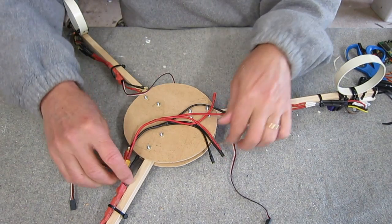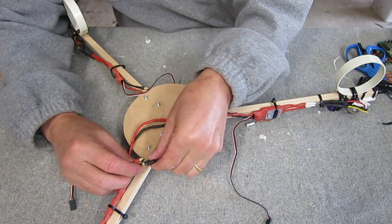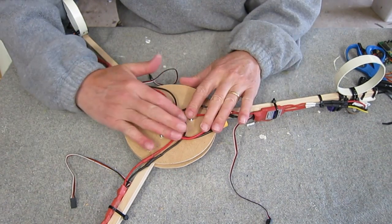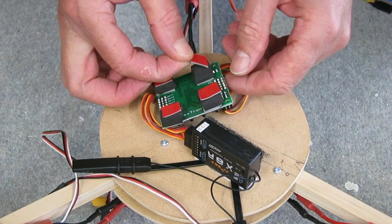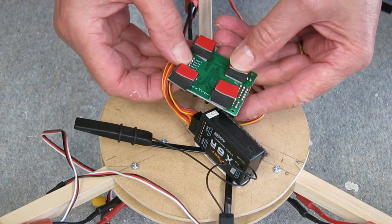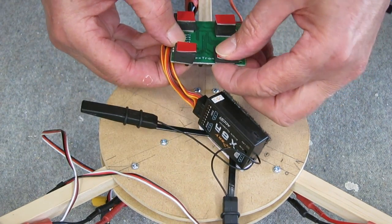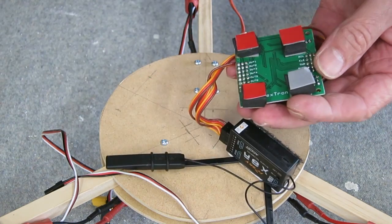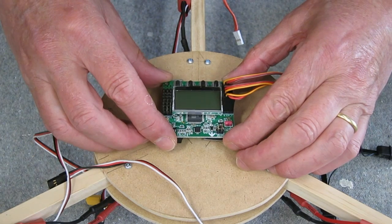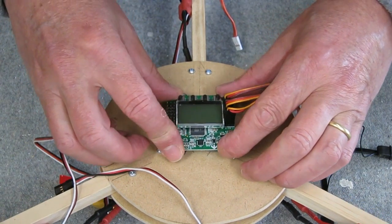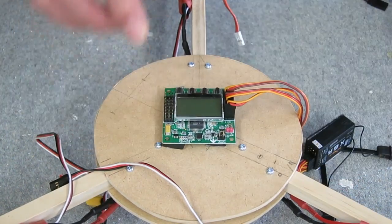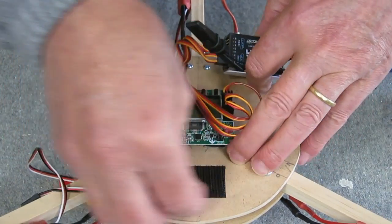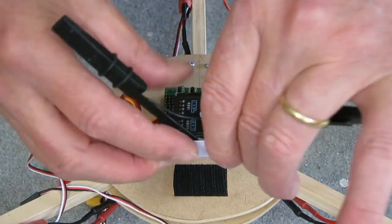Now I'm attaching all the ESCs to the battery using the power distribution cable. Now I'm mounting the KK2 board onto the body using little foam pads cut from its packing material, actually double sided tape. That needs to be mounted right in the centre, right in the CG, in the geometric centre of where the motors are. I'm just going to Velcro the receiver on in front there.